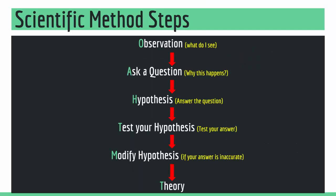We have several steps. We basically make an observation in the physical world, and then we try to ask a question about why something is happening. Then we come up with a hypothesis that explains why this kind of behavior is happening. Then we test our hypothesis to see whether we are right or wrong. Then we either modify our hypothesis if it's not correct, or we stick to it and it becomes a theory. We make an observation, ask a question, come up with a hypothesis, test it, modify if needed, and when it matches our results it becomes a theory.